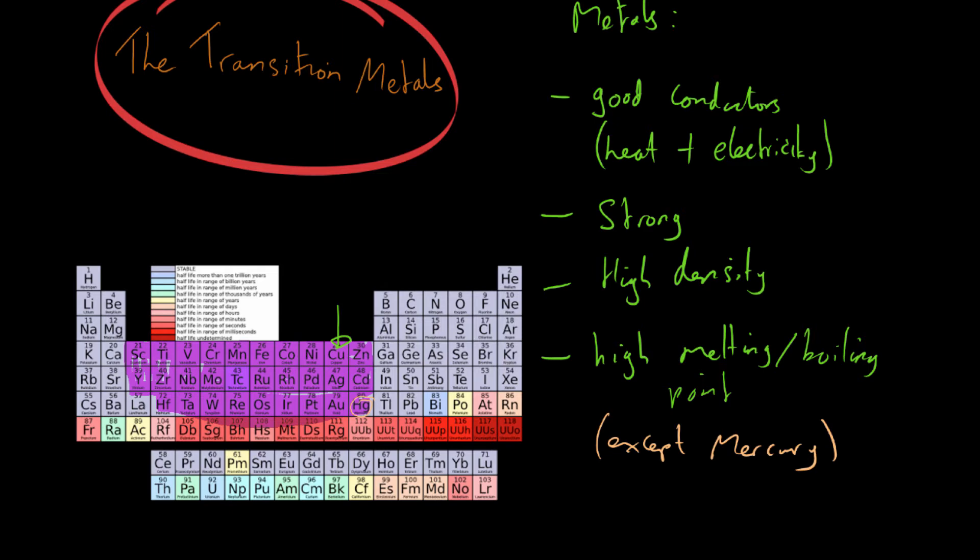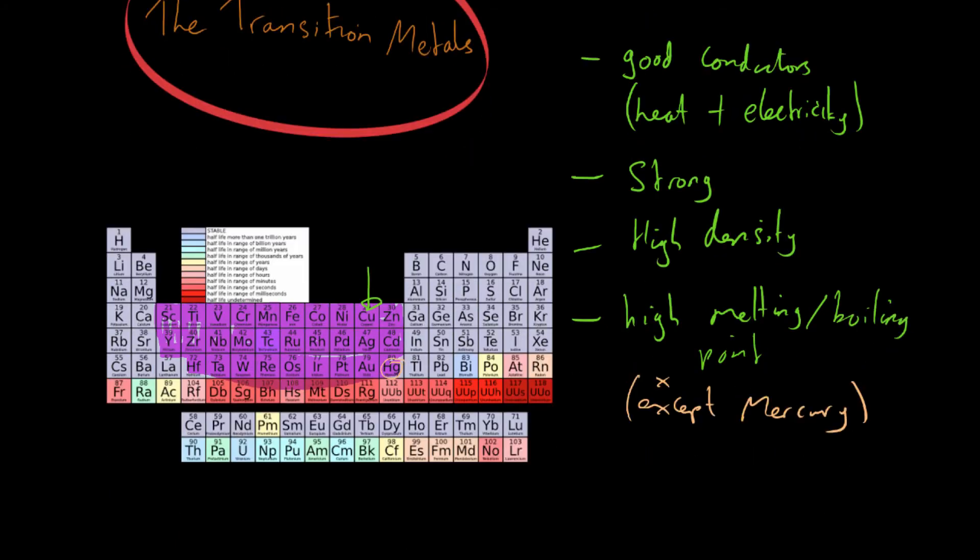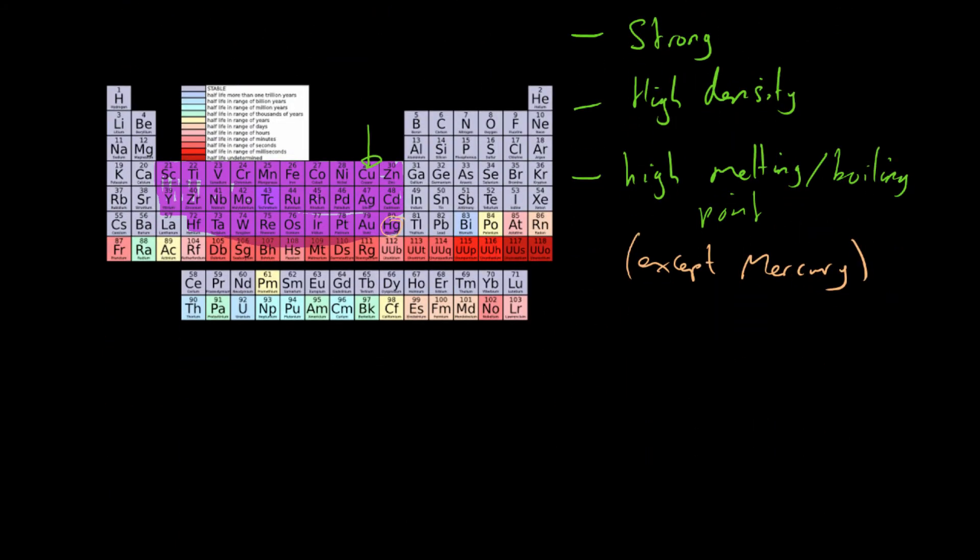Now that's all well and good. A lot of metals have similar properties to this. They are strong, good conductors with a high density. Obviously group one metals are not as strong and they don't have as high density. And their boiling points and melting points are generally lower, apart from mercury of course. But what makes the transition metals special is their chemical properties, not their physical properties.